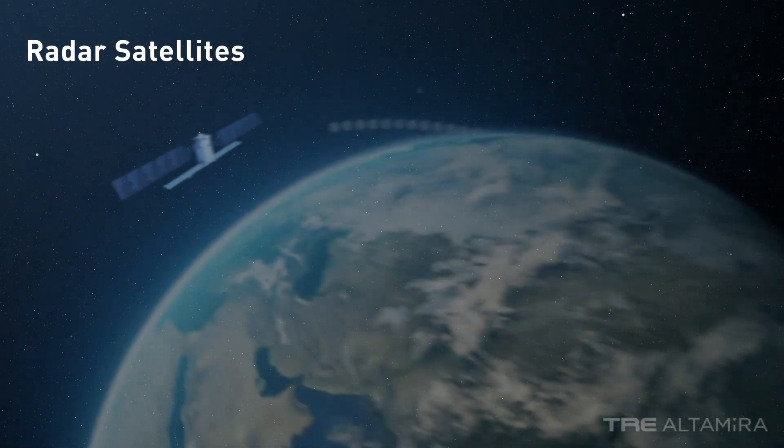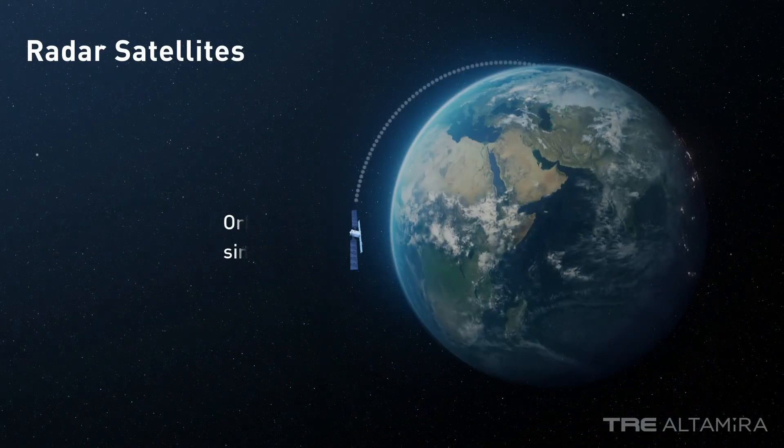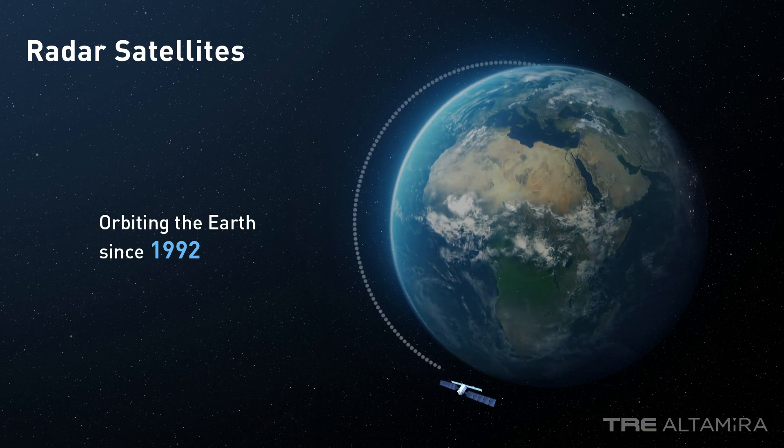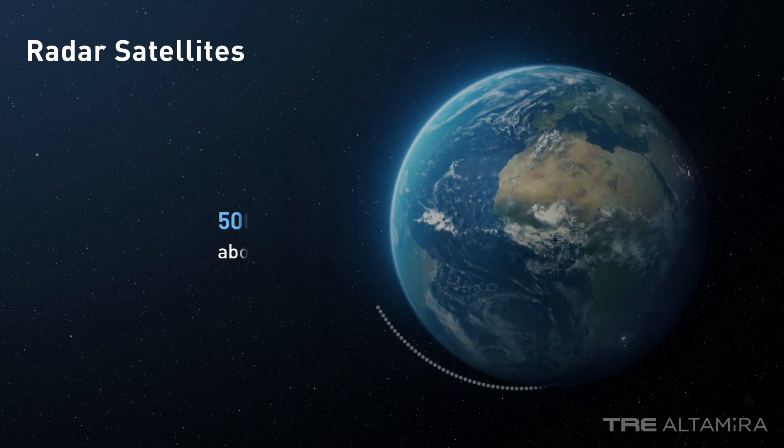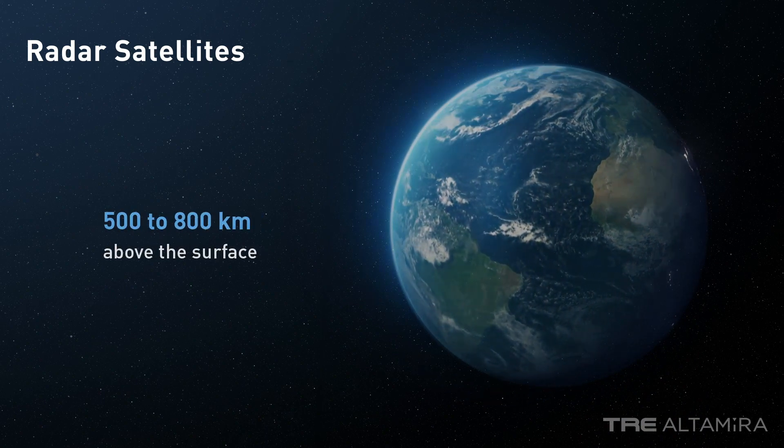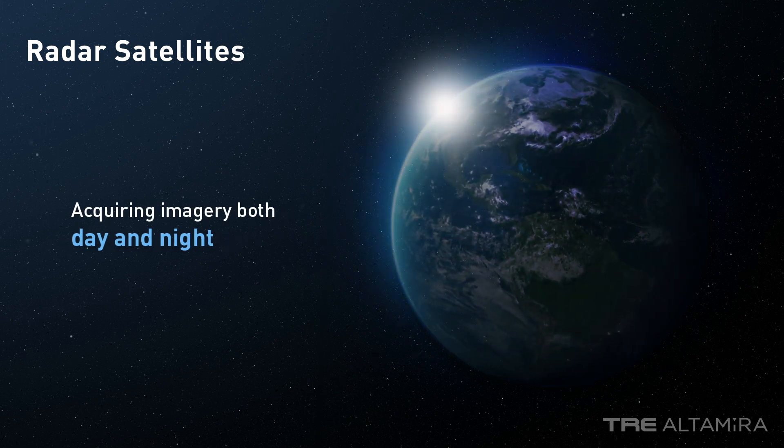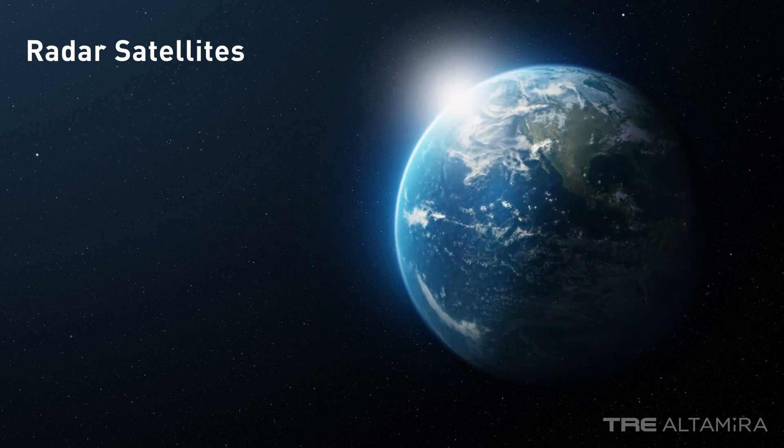Since 1992, radar satellites have been orbiting the Earth in a near-polar orbit. They range in altitude, traveling 500 to 800 kilometers above the Earth, and they capture images both day and night, even through cloud cover.